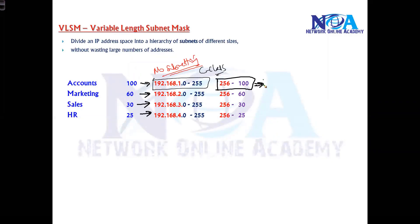Each C class network supports 256 addresses by default. Out of these 256 addresses, I'm just using 100 in Accounts, meaning around 150+ addresses are not being used. Likewise, around 200 addresses are wasted in other departments. To avoid this, we use FLSM.